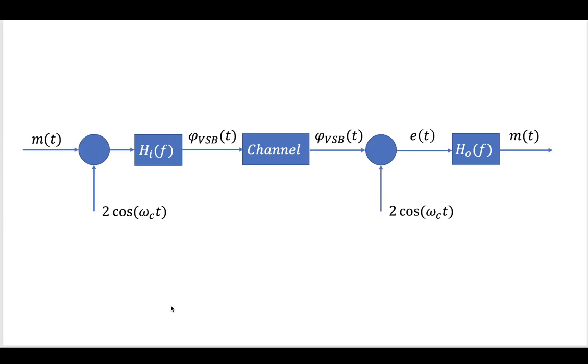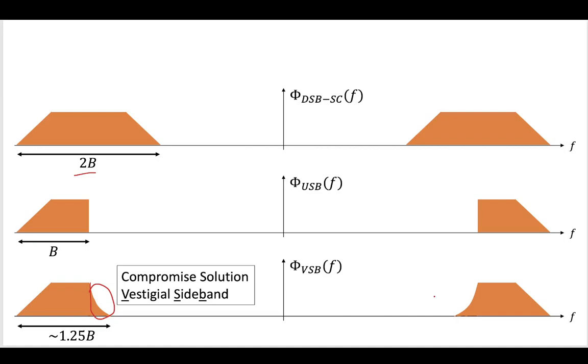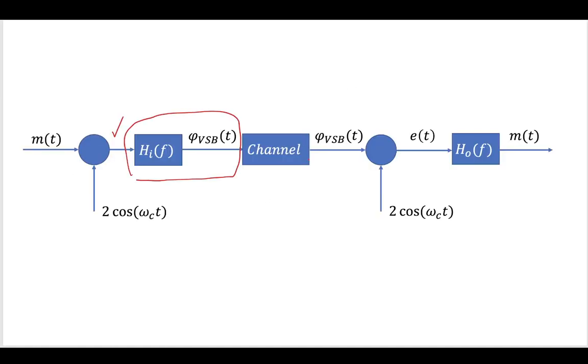The vestigial sideband amplitude modulation scheme would look something like this. First, you have your message and your carrier come together to create a modulation. Then this is where it gets different. You would add in a first filter, and this would be a bandpass filter. So you would have some kind of bandpass filter that would remove some of these portions at this point.